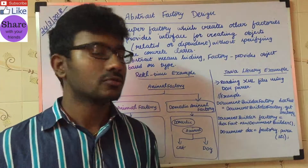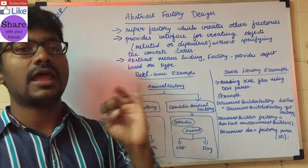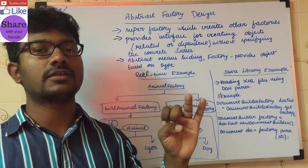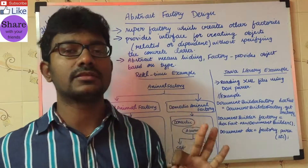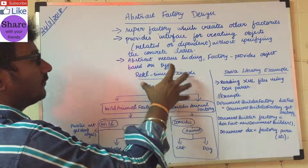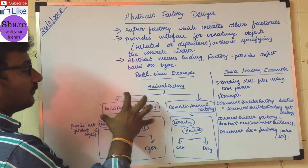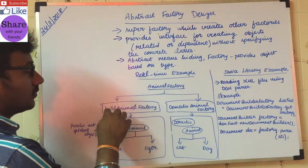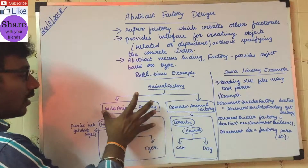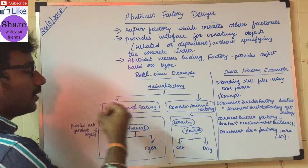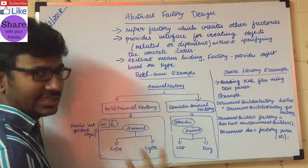It's very abstract. The requirements given to the animal factory might be: I need a wild animal, the number of legs should be four, and the weight should be less than a certain limit. Based on these three requirements, the animal factory processes them and chooses the appropriate factory — here, the wild animal factory would be more appropriate. Based on the criteria, the appropriate concrete object returned would be lion.